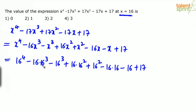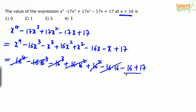Now simplify: 16·16³ = 16⁴, so the 16⁴ terms cancel. 16·16² = 16³, so the 16³ terms cancel. 16·16 = 16², so the 16² terms cancel. What we're left with is -16 + 17 = 1. So the answer is option 2.